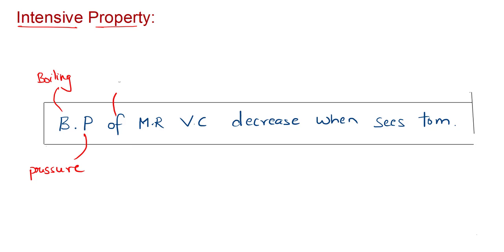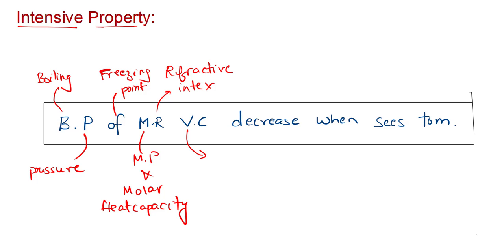P is denoted as pressure. F refers to freezing point. M refers to melting point and molar heat capacity. R refers to refractive index. V denotes viscosity.